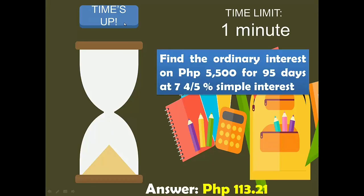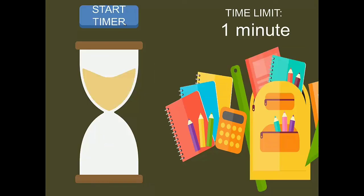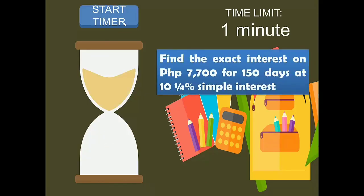Time's up. The answer is P113.21. Now for the second problem: Find the exact interest on P7,700 for 155 days at 10.14% simple interest. Timer starts now.